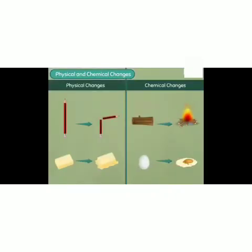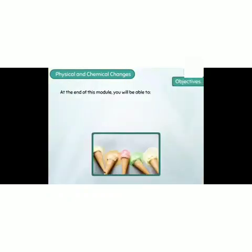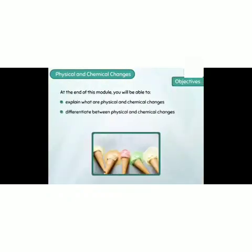If the shape, size, color, or state changes, we call it a physical change. If a new substance is formed, it is a chemical change. At the end of this module you will be able to understand the differences.